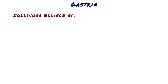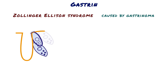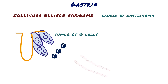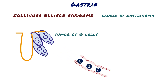Zollinger-Ellison syndrome is caused by gastrinoma. Gastrinoma is a tumour derived from G-cells in the duodenum, pancreas, or less commonly the stomach, that secretes the peptide hormone gastrin. The signs and symptoms of Zollinger-Ellison syndrome are all attributable to high circulating levels of gastrin.